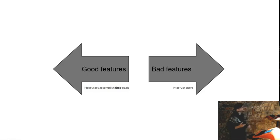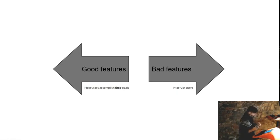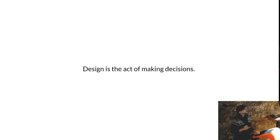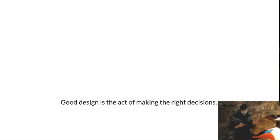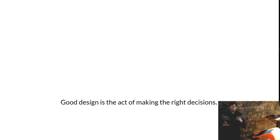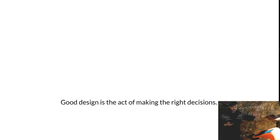We now have a more refined model. Good features are those that help users accomplish their goals. Bad features interrupt users. That's already a better model, but we can do even better. Design is the act of making decisions — and good design is the act of making the right decisions. As a software developer, your job is to make the right decisions for people so that they can focus on their own decisions. You want to handle all the complexity behind the scenes and only surface what's interesting for the user, so they can be happy.